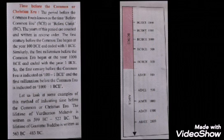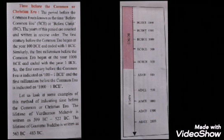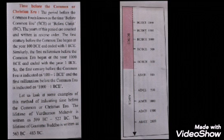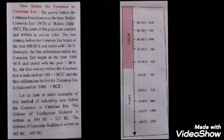Let us look at some examples. The lifetime of Vardhaman Mahavir is written as 599 BCE to 527 BCE. The lifetime of Gautama Buddha is written as 563 BCE to 483 BCE.